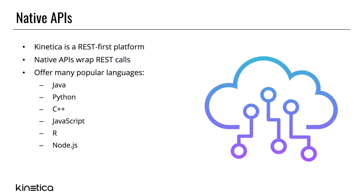Kinetica's native APIs cover a wide range of popular programming languages like Java, Python, C++, JavaScript, and more. See the documentation site for a list of all of the supported native APIs.